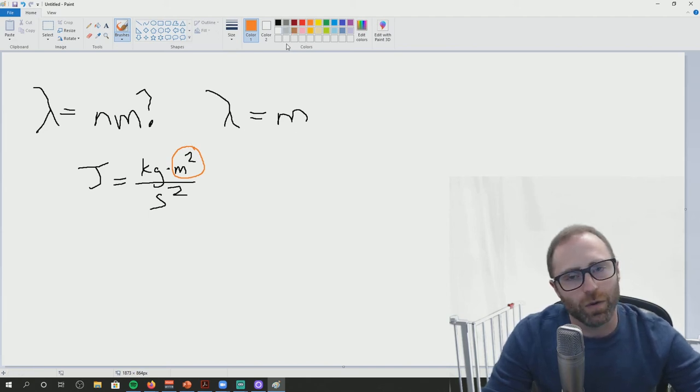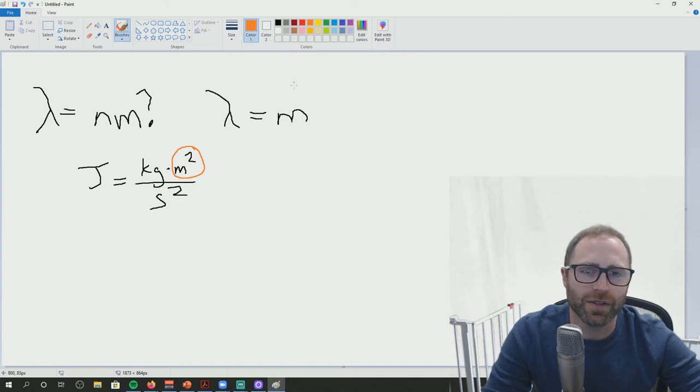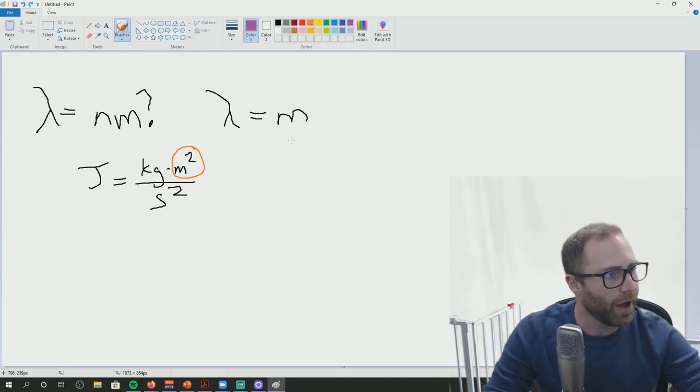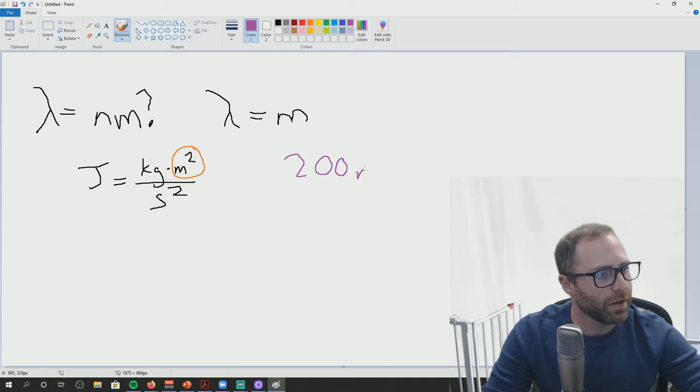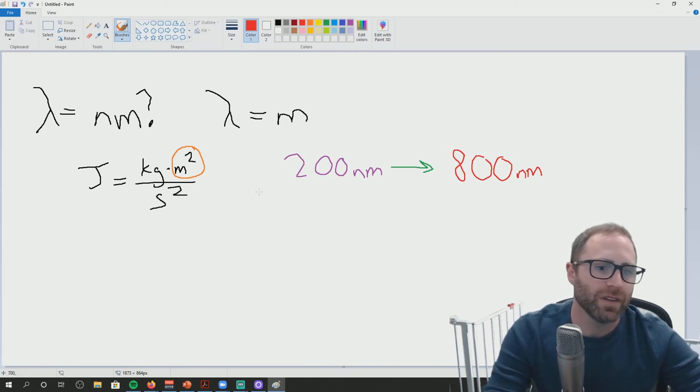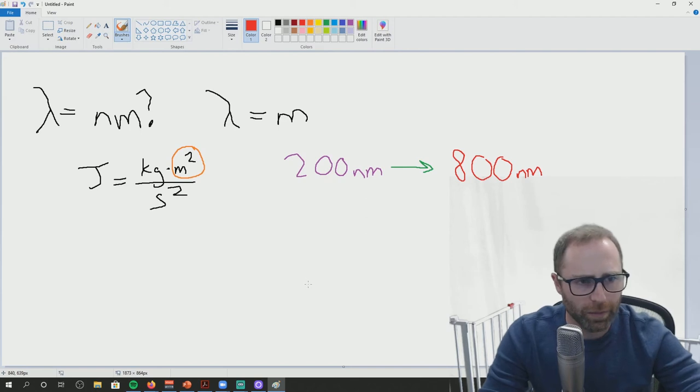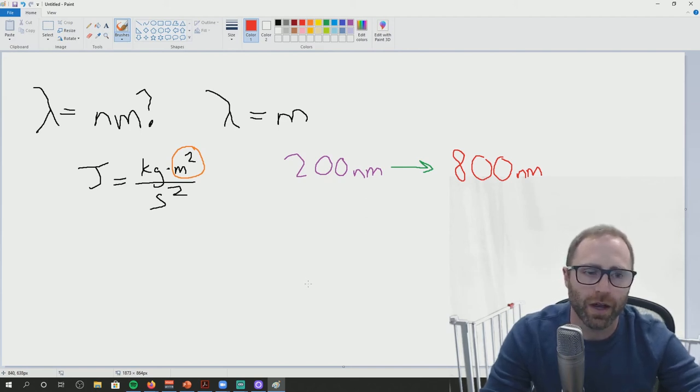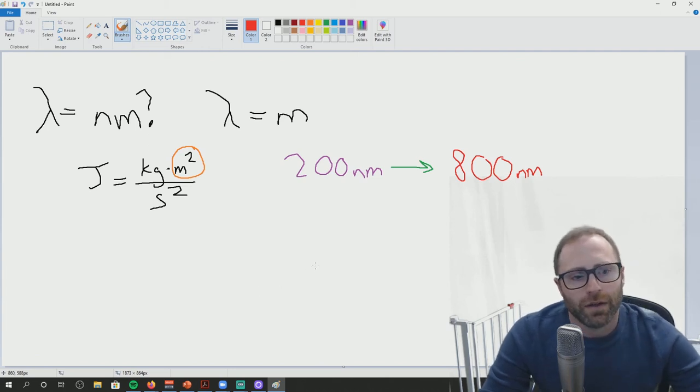Now, because of the whole visible light spectrum thing, visible light, your ability to see that little thing, all of those numbers are between about 200 nanometers through about 800. It's not exactly 800, but close enough. This is the whole visible light spectrum. This 200 to 800. That's why nanometers get reported most of the time.